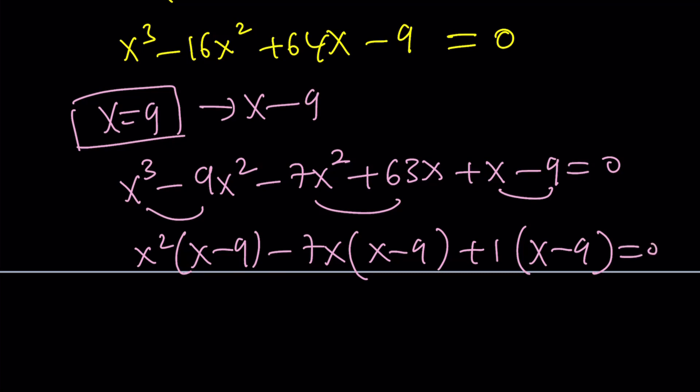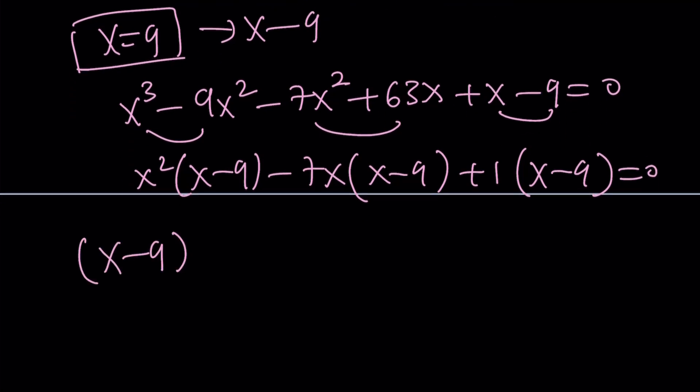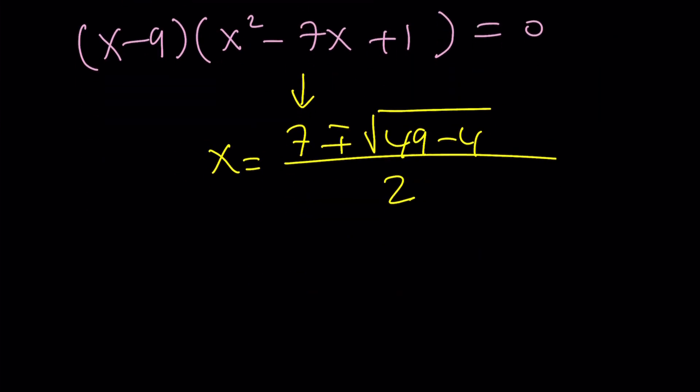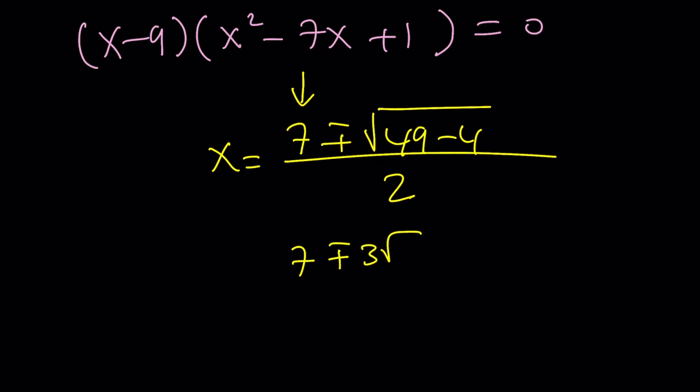Now we can factor this. It's going to be x squared times x minus 9 minus 7x times x minus 9 and 1 times x minus 9. Obviously x minus 9 is a known factor. And then the rest is going to be x squared minus 7x plus 1 equals 0. From here we get a bunch of solutions. The first one is x equals 9. And the quadratic gives us two other solutions: 7 plus minus the square root of 49 minus 4 divided by 2. And that's going to give us 7 plus minus 3 root 5 over 2.